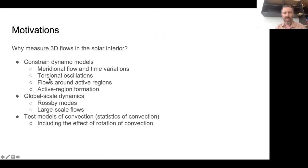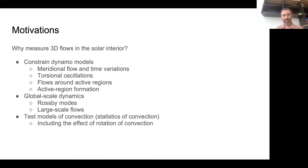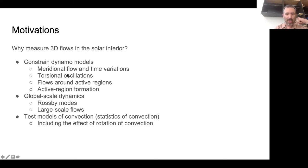Why do we want to measure 3D flows in the solar interior? With these motivation slides, it's a bit of a subjective question. But here are some ideas. One thing we can do is constrain dynamo models. For example, we can measure the meridional flow and its time variations. Also, the time variations of the differential rotation - this gets termed torsional oscillations. Flows around active regions are things that matter for flux transport, therefore for the dynamo.